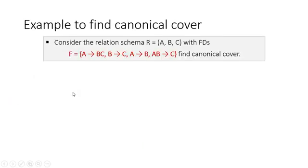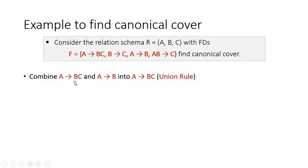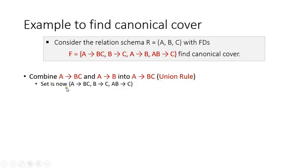Let us solve an example. Consider the schema with functional dependencies: A determines BC, B determines C, A determines B, and AB determines C. To find the canonical cover, as per the algorithm we first check the union rule. We combine A determines BC and A determines B into A determines BC using the union rule. So the new set becomes: A determines BC, B determines C, and AB determines C — removing the separate A determines B since it is already subsumed by A determines BC.